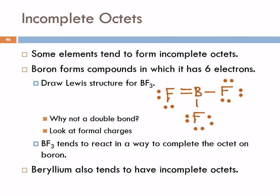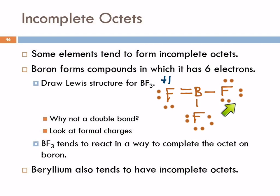We could make a double bond, right? That doesn't violate the octet rule. But what do formal charges tell us? The formal charge on this fluorine — it had seven valence electrons and here it owns six, so the formal charge is plus one. The other fluorines are zero. The formal charge on the boron is negative one. The other structure that violates the octet rule is better because the formal charges are zero.